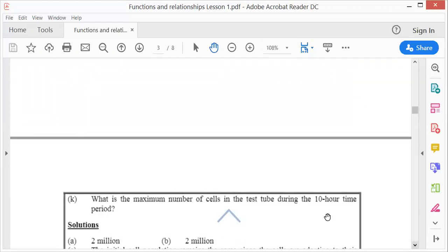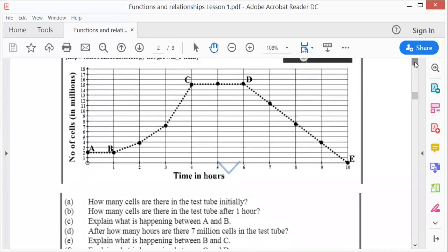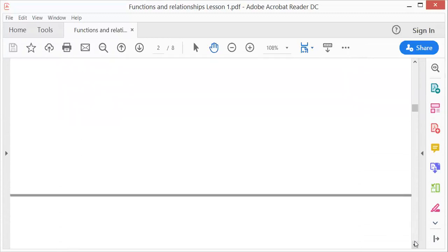What is the maximum number of cells in the test tube during the 10-hour time period? From here to here is 10 hours. The maximum is between C and D, so the maximum will be 15 million. I hope you've enjoyed this one.